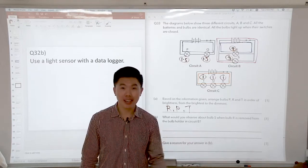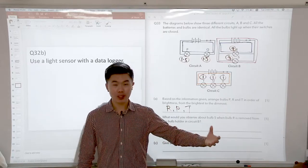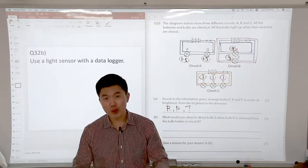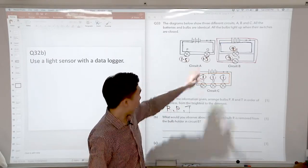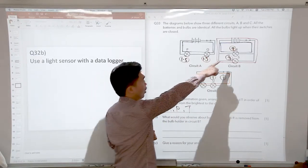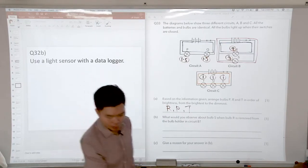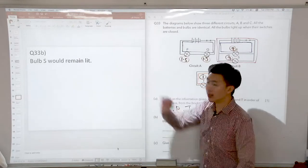If you look at circuit B, the bulbs are arranged in parallel. So what did we learn about parallel circuits? When one bulb fuses, there's still a closed circuit with the other bulb, which means that electric current can still flow through the other bulb, allowing the other bulb to be lit. So if I remove bulb R, what will happen to bulb S? Bulb S will remain lit. So that is our answer for part B.